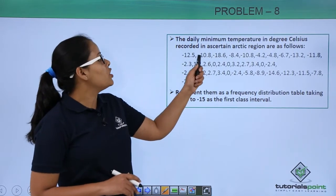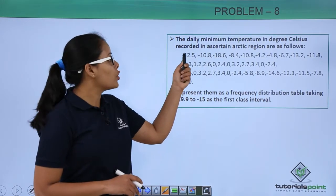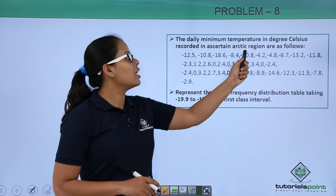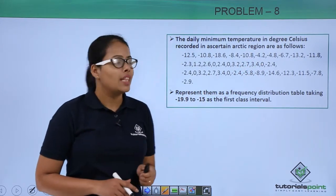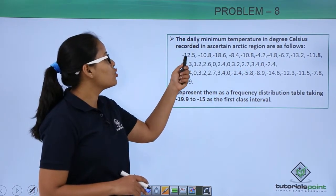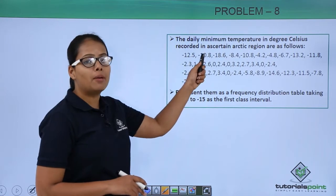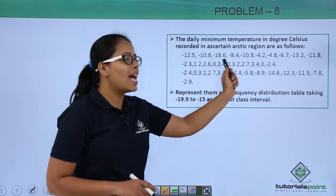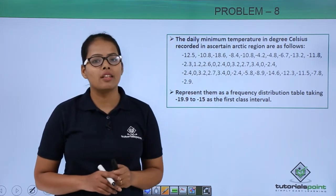This problem says the daily minimum temperatures in degrees Celsius recorded in a certain Arctic region are as follows: -12.5, -10.8, -18.6, and so on for all the other observations.